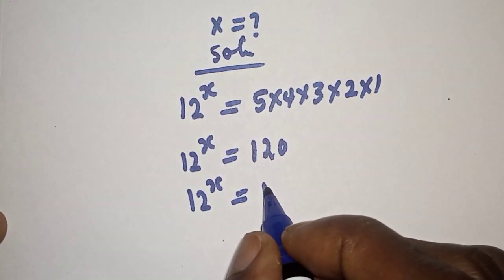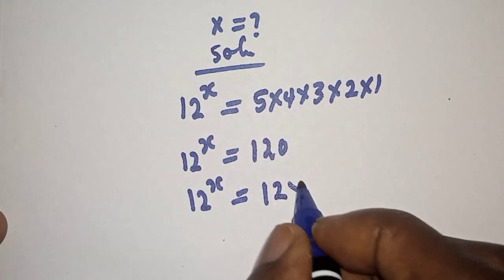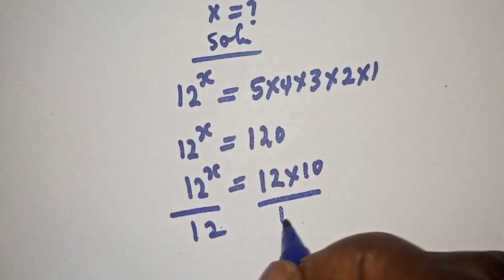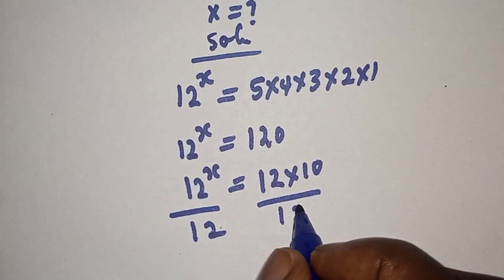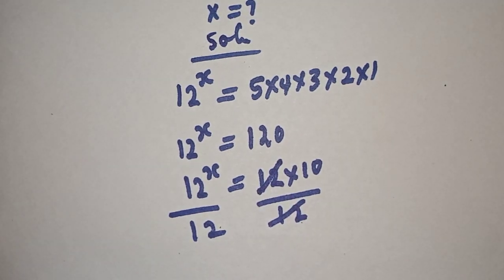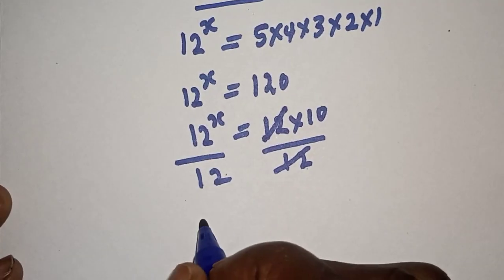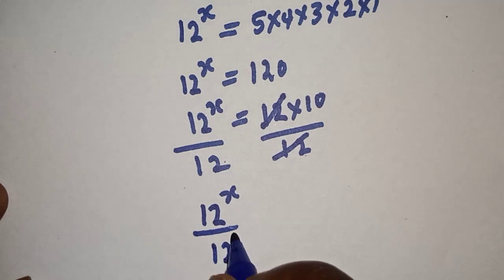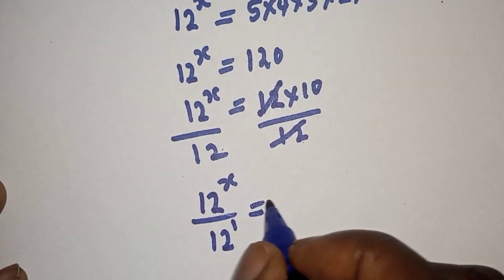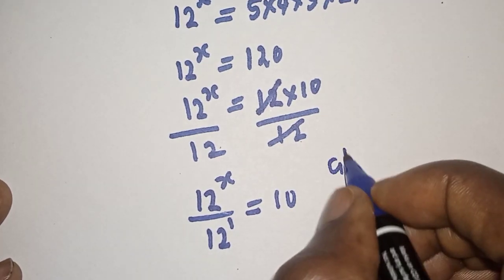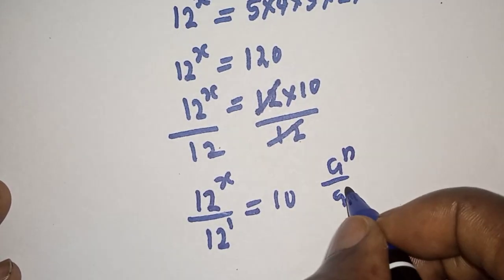12 raised to power s is equal to 120, which can be written as 12 multiply by 10. Divide both sides by 12 — this cancels — and we have 12 raised to power s over 12 raised to power 1 is equal to 10.